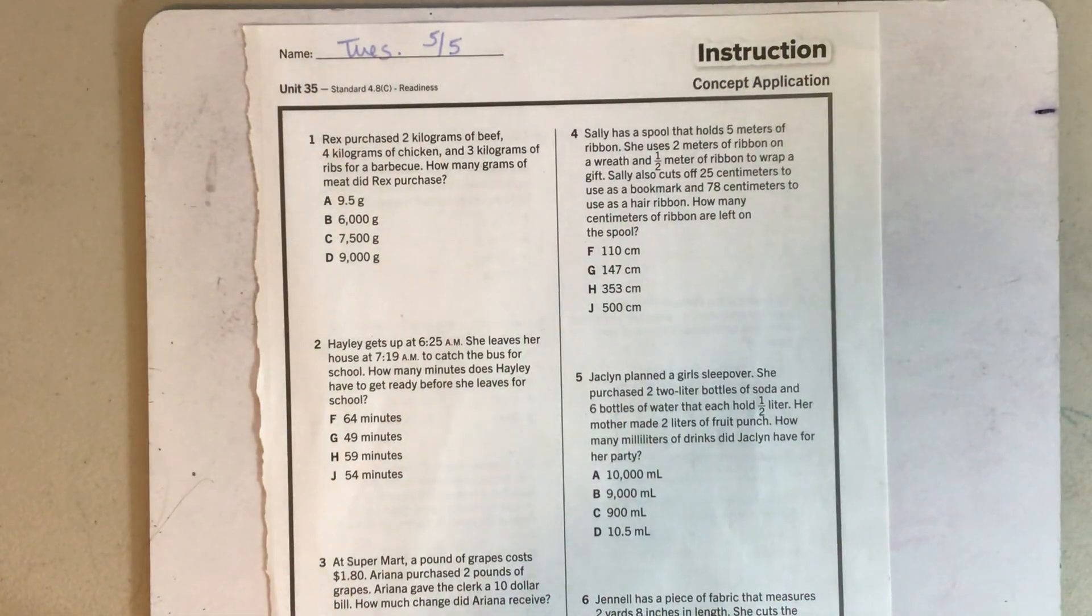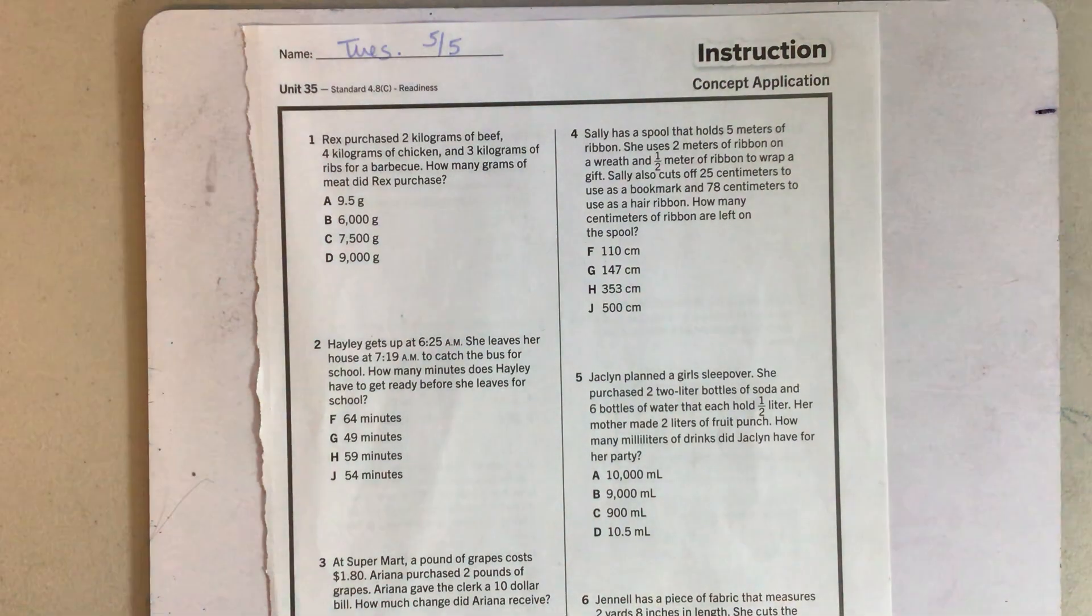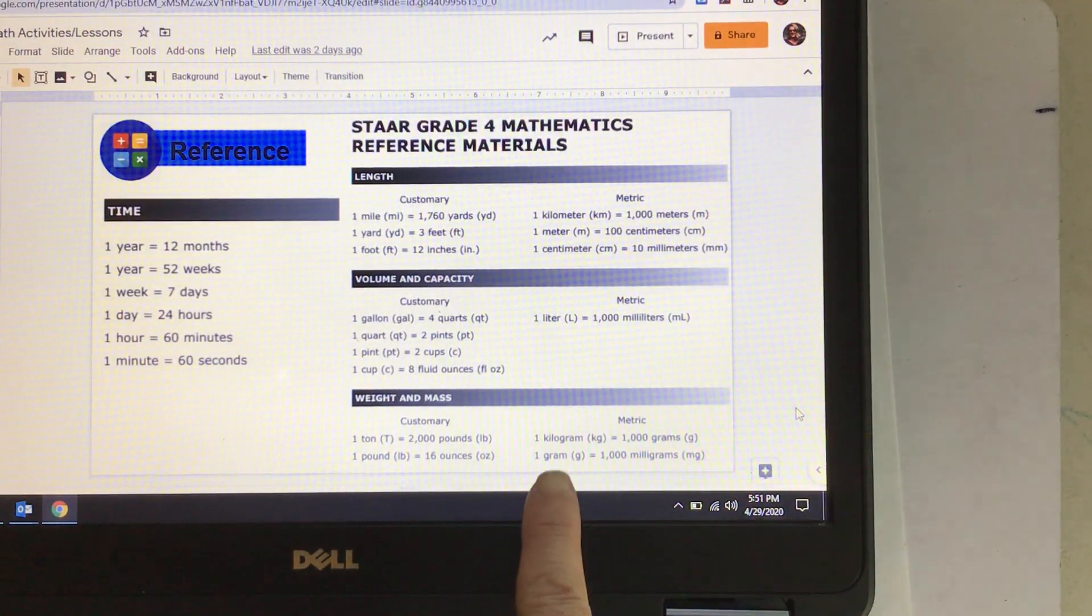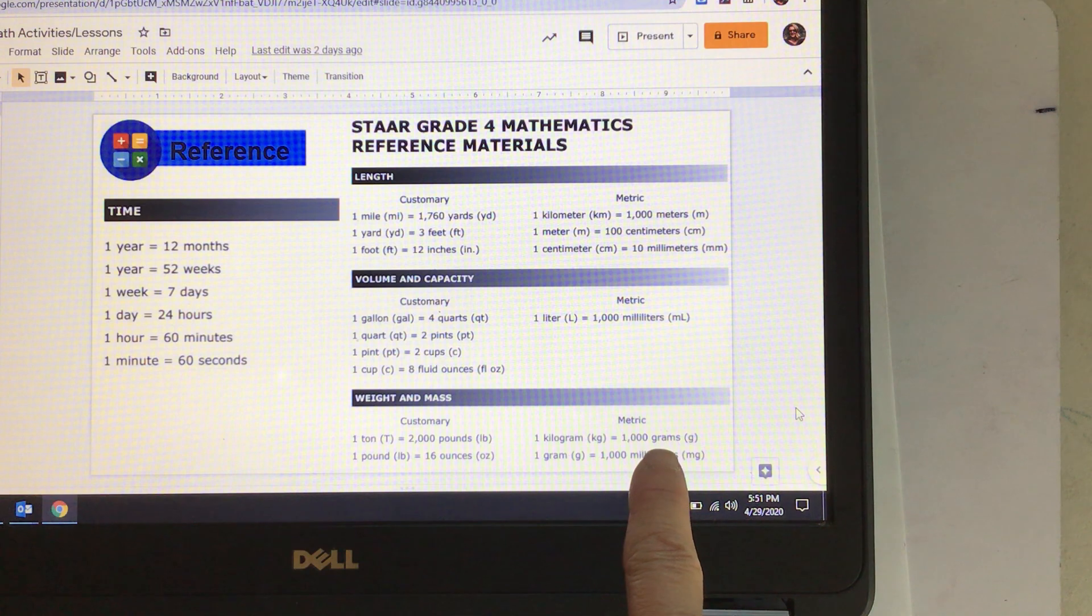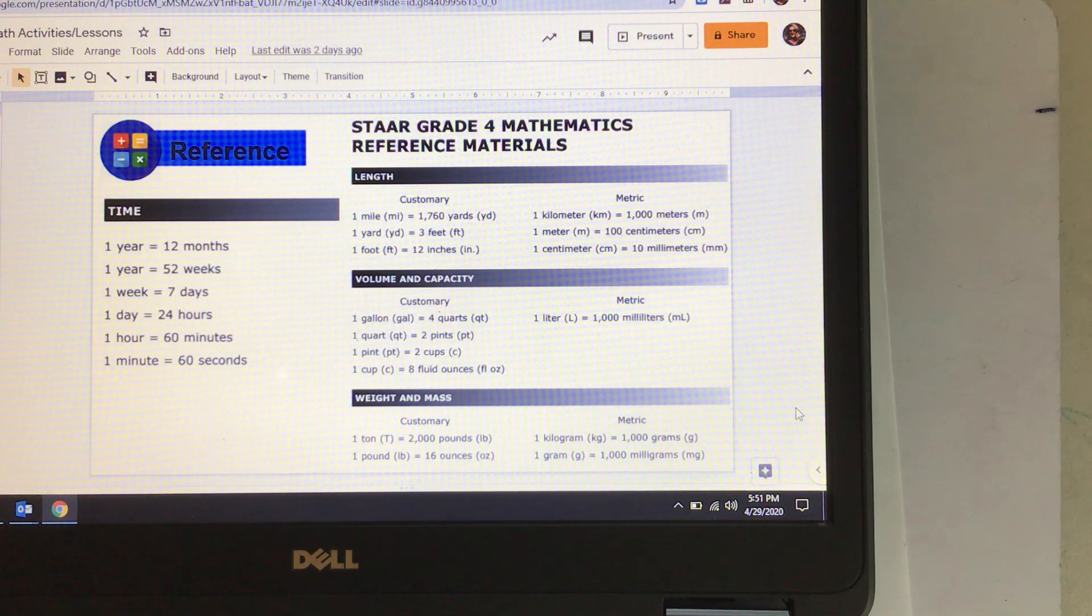It's asking us how many grams they purchased, but yet it gave us everything in kilograms. And if you look at your conversion chart, grams and kilograms. Does anyone remember how many grams are in a kilogram? This is the metric system, so remember they work off the tens, the hundreds and the thousands. But if you look at your conversion chart, one kilogram is a thousand grams.